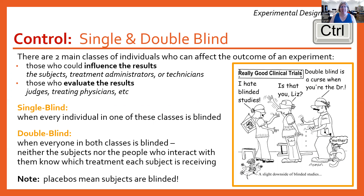Double blind becomes really important for things that are more subjective. For example, if I was testing whether an iron supplement caused people's iron levels to increase, that's a blood test — it's pretty objective. The machine spits out a number. But if I was rating how white people's teeth are, that's more subjective. In that case, you'd want nobody to know whether they're getting the actual treatment or the placebo. Double blinding does get expensive, so you want to use it only when it's really going to add to the quality of your results. When results are more objective, you can get away with single blind.